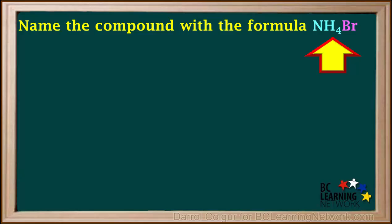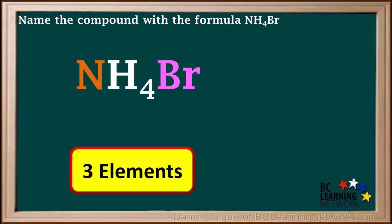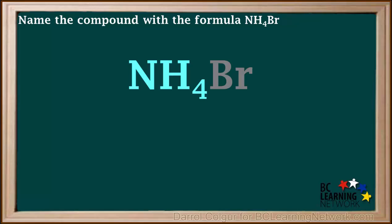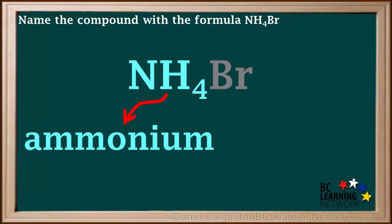Here we're asked to name the compound NH4Br. We see that NH4Br has three elements — nitrogen, hydrogen, and bromine — therefore it must contain a polyatomic ion. Looking on the table, we see that NH4 in the formula is from the polyatomic ion NH4⁺, or ammonium. Names of polyatomic ions don't change when they are part of a compound name, so the first part of the name is ammonium.